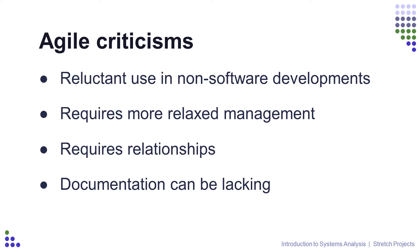Agile is not without its problems though. Because it's primarily branded as a software development methodology, people are reluctant to use it for other types of systems development. The fact that there are many sprints means that managing progress closely can be problematic, because the development isn't at any one specific point in time — it's in a specific area — and being more relaxed about management, particularly on big expensive projects, can be a huge attitude shift. It also requires that a relationship be established between the business and the developers, with two-way communication — which sounds obvious, but it's not always the case with Waterfall-based projects.